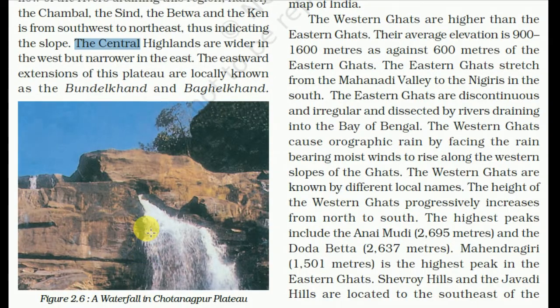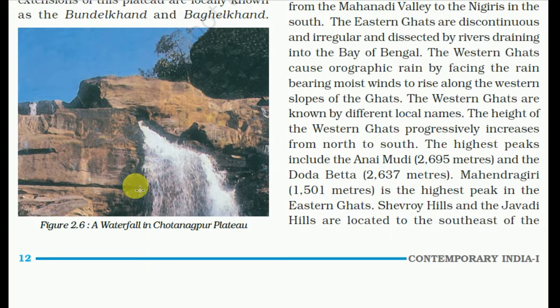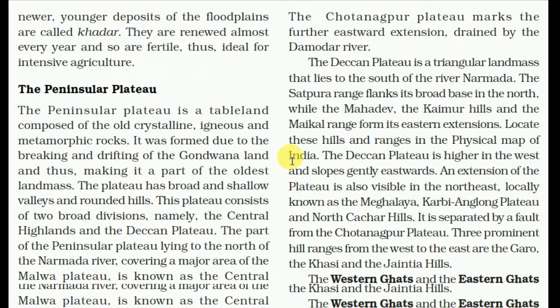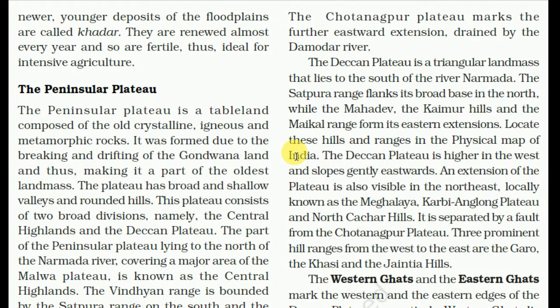The Central Highlands are wider in the west but narrower in the east. The eastward extensions of this plateau are locally known as Bundelkhand and Baghelkhand. The Chotanagpur Plateau marks the further eastward extension, drained by the Damodar river. The Deccan Plateau is a triangular landmass that lies to the south of the Narmada river. The Satpura Range flanks the broad base in the north, while the Mahadev, Kaimur hills, and Maikal Range form its eastern extension.